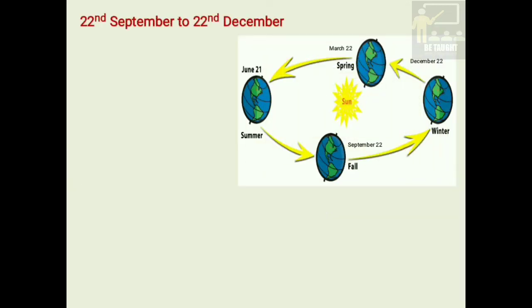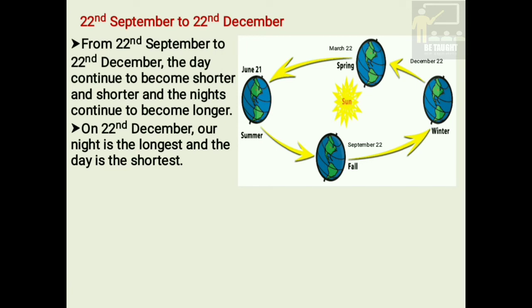Now let us learn the duration from 22nd September to 22nd December. From 22nd September to 22nd December, the day continues to become shorter and shorter and the nights continue to become longer. On 22nd December, our night is the longest and the day is the shortest.